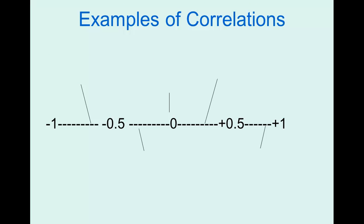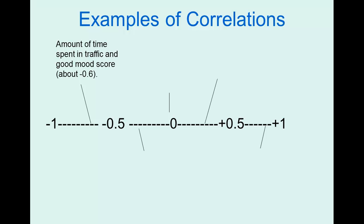Here is the number line from negative one to positive one, with some real-life correlation examples. There is a negative 0.6 correlation between the amount of time spent in traffic and good mood scores. This value is negative, meaning as one variable goes up the other goes down — the more time you spend in traffic, the less good mood score you have. The value of 0.6 is closer to negative one than to zero, which means this is a pretty strong relationship.